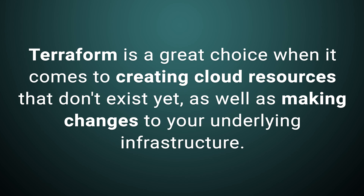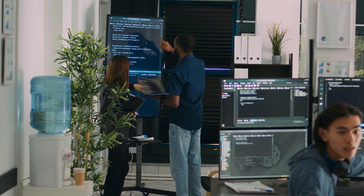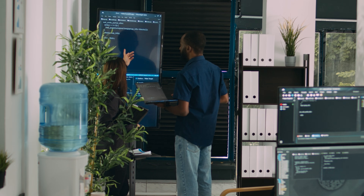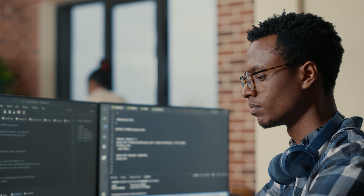Terraform is a great choice when it comes to creating cloud resources that don't exist yet, as well as making changes to your underlying infrastructure. In an empty cloud environment, you could use Terraform to define and create the underlying network, as well as the instances that will utilize it. When it comes to networking, you could configure entire network subnets — including how they're accessed, right down to the IP address scheme. For server instances, you could define details such as how many CPU cores the VM must have, and which image to create your instances from. On Linode, for example, you'd choose the Debian image and tell Terraform which one to use.